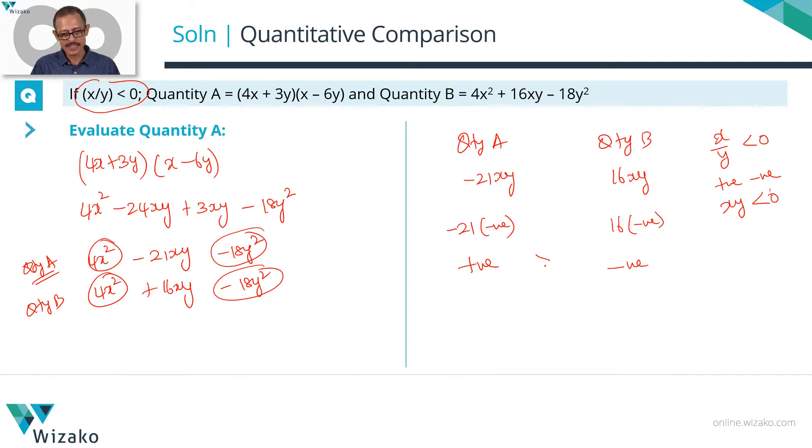A positive number is going to be greater than a negative number which means quantity A is greater than quantity B. Choice A is the answer to the question.